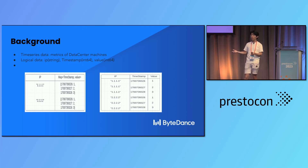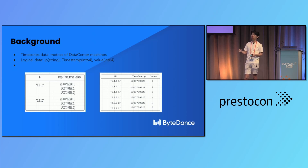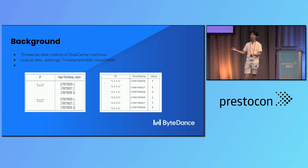This is the background — we're running aggregations on time series data with two equally viable representations. The aggregation queries would be something like SELECT all and then GROUP BY IP and SUM the value.